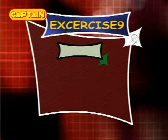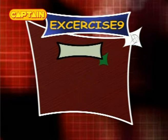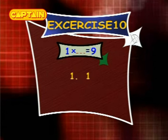Exercise 9: 5×__ equals 40 — options are 8, 4, 8. Exercise 10: 1×__ equals 9 — options are 9, 9, 10.